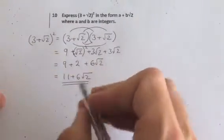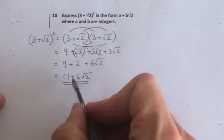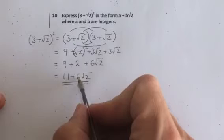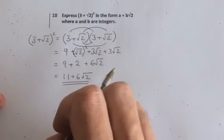OK. And this is in the form of a + b√2, where a and b are integers, whole numbers. So, that's my final answer.